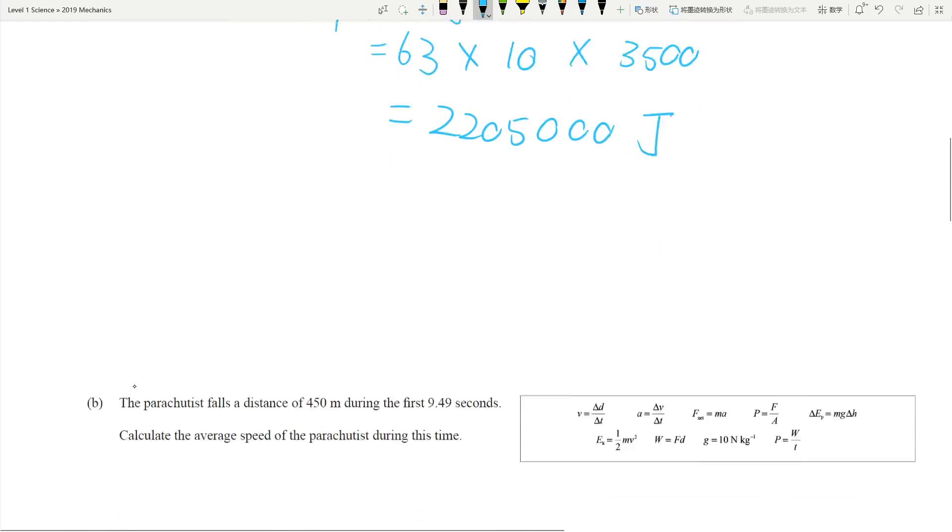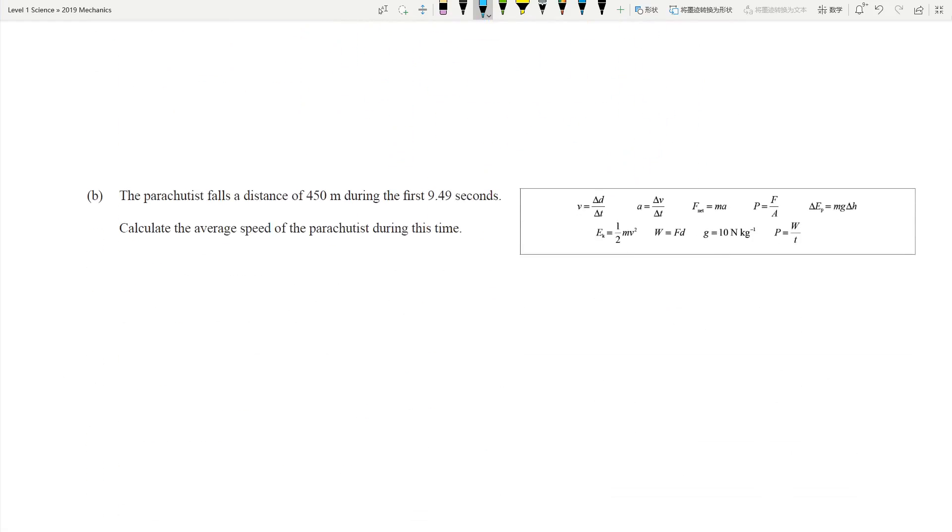Next question. The parachutist fell a distance of 450 meters during the first 9.49 seconds. Calculate the average speed. This looks like an achieved equation. You're looking at speed, which is v. You've got distance, which is 450 meters. You've got 9.49 seconds, which is time. So v equals d divided by t. It would just be 450 divided by 9.49 seconds, and you should get 47.4 meters per second. Achieved. Done.